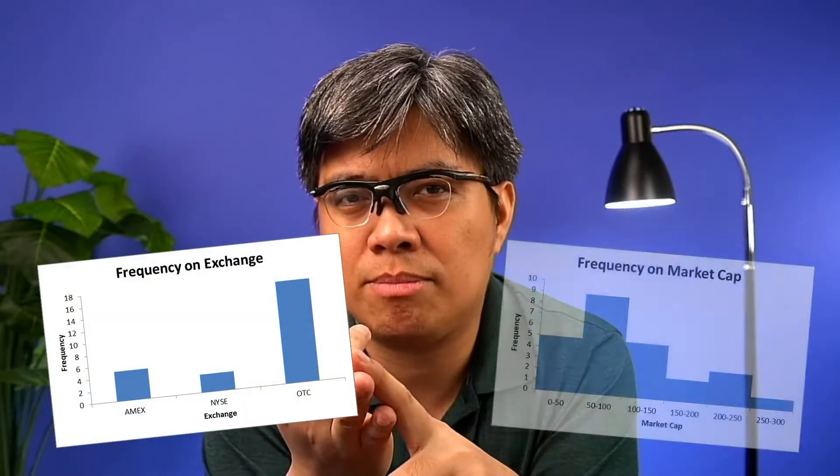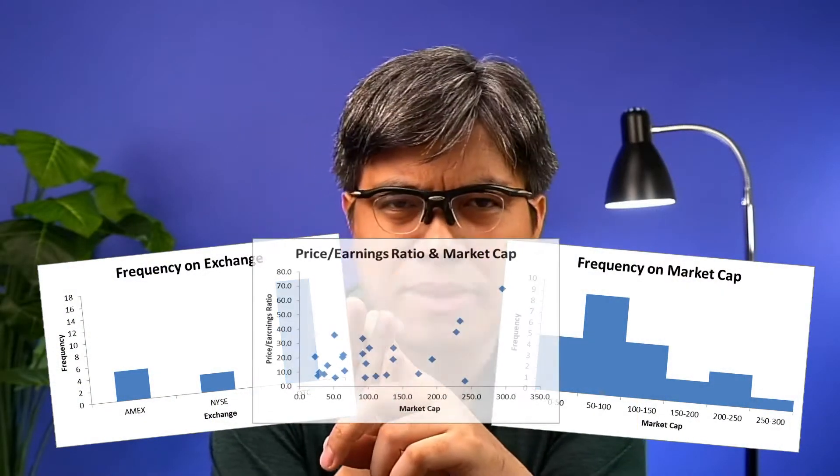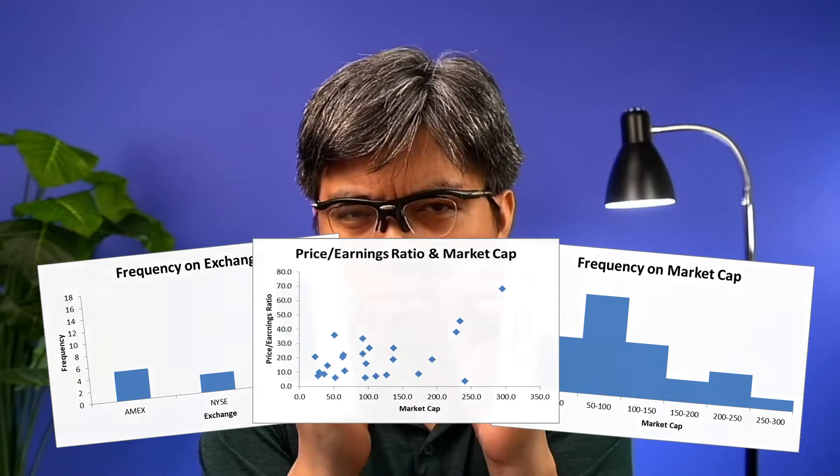A variation of tabulating your data is using charts to visualize your distribution — whether you're using a bar chart, a histogram, or a scatter plot. The point is to visualize it so you can see which category or interval has higher or lower bars. It gives you the same insight as tabulation but in a visual form.